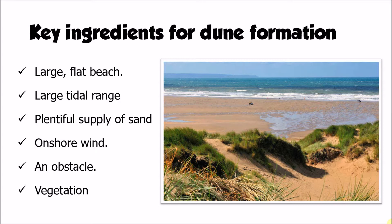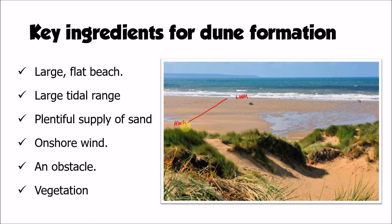We're going to look at each of these ingredients in turn, and some of them are actually linked together, particularly the first two. We've got a very large flat beach here — that huge expanse of sand, that classic kind of ridge and runnel foreshore. Get a sense of the scale when you look at the size of the car and the people on the beach. What we can also associate with this beach is a large tidal range. The water here is at the low water mark, so the tide is out, and you can get a sense of where the high water mark is going to be. This area of beach in the foreground is probably going to be where the water reaches at high tide, so we've got a very large expanse of sand which is exposed at low tide.